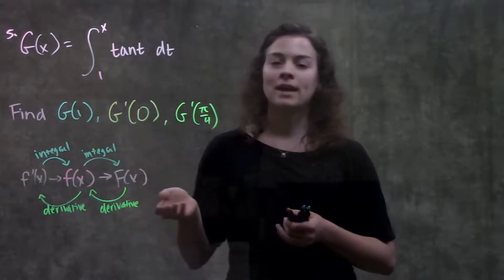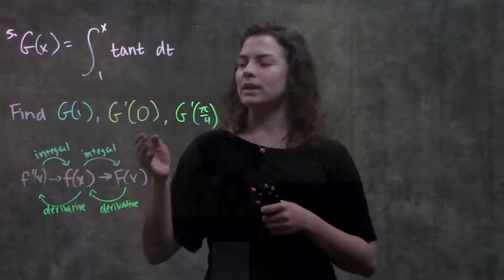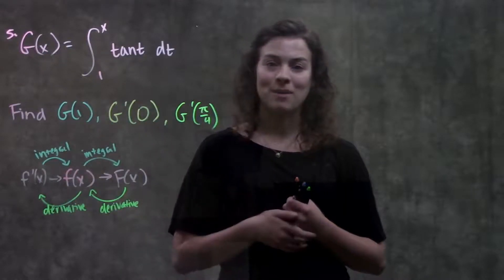It gives us this function, and it's asking for g of 1, g prime of 0, and g prime of pi over 4.